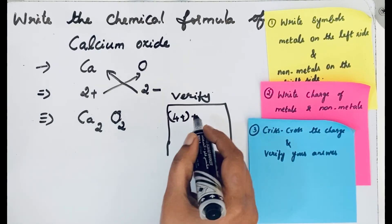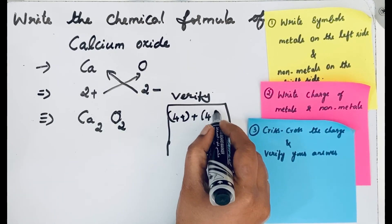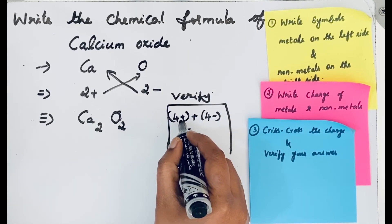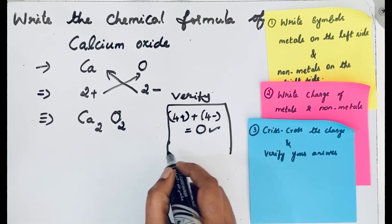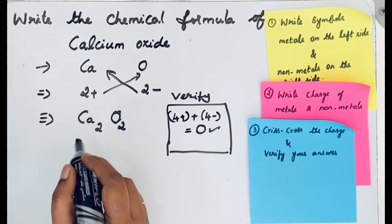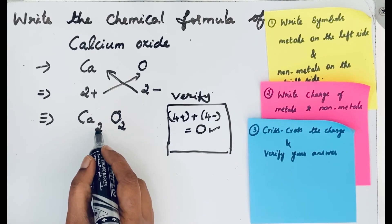The charge is 2-, so 2 times 2- equals 4-. If we add 4+ and 4-, we get 0, meaning the compound is neutral. But see here, this can be simplified.